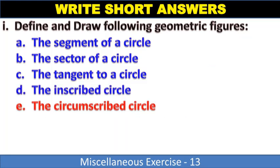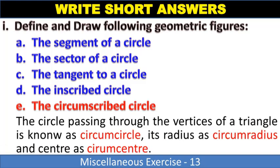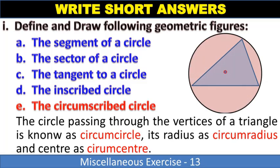The circumscribed circle: The circle passing through the vertices of a triangle is known as circumcircle, meaning it touches the corners. The radius is called circumradius and the center is called circumcenter.